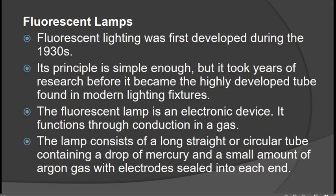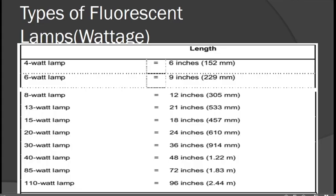Fluorescent lighting was first developed in the 1930s. Its principle is simple, but it took years of research to become the highly developed tube found in modern lighting. The fluorescent lamp is an electronic device consisting of a resistor, an inductor, and a capacitor.